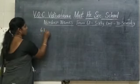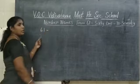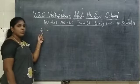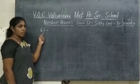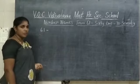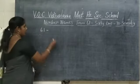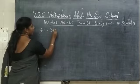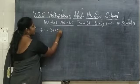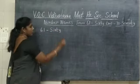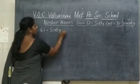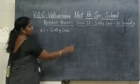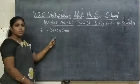6, 1 — 61. What number is this? 61. What is the spelling of number 61? S-I-X-T-Y O-N-E. 61.